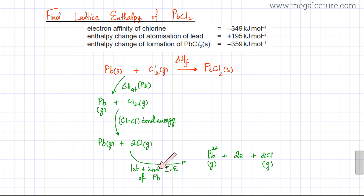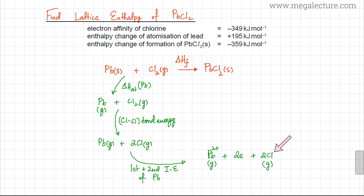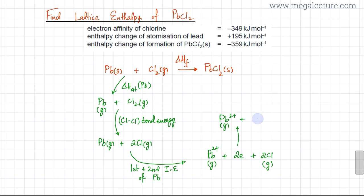The next step involves the chlorine atoms gaining electrons. Lead remains as a gaseous 2+ ion unchanged, while each of the 2 chlorine gaseous atoms gains 1 electron to form 2 Cl⁻ gaseous ions. This step equals the electron affinity of Cl atoms multiplied by 2, because there are 2 Cl atoms each gaining one electron.